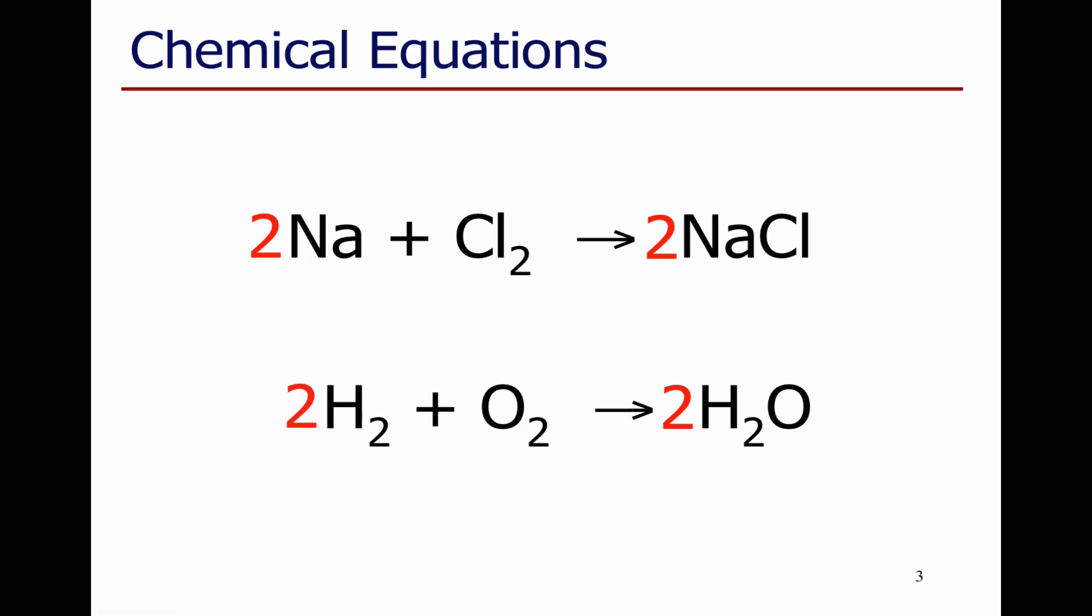So again, put a two in front of the hydrogen to make sure that I've now got the same number of hydrogen atoms. Two hydrogen molecules is two H2s, which means four hydrogen atoms on the left, four hydrogen atoms on the right, and again, everything's balanced.